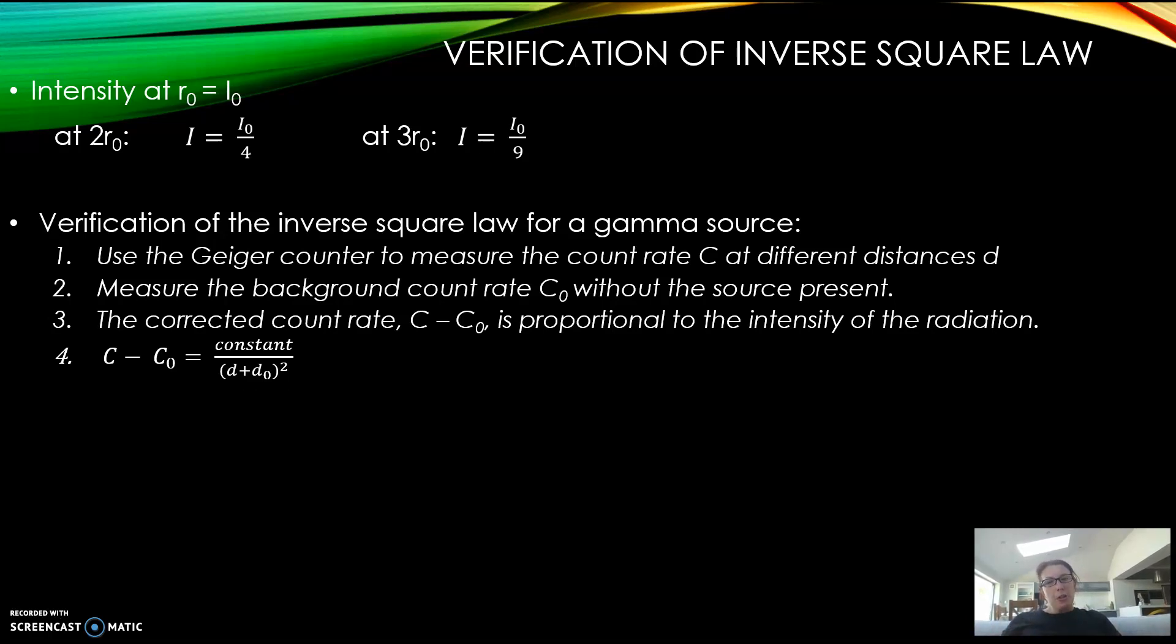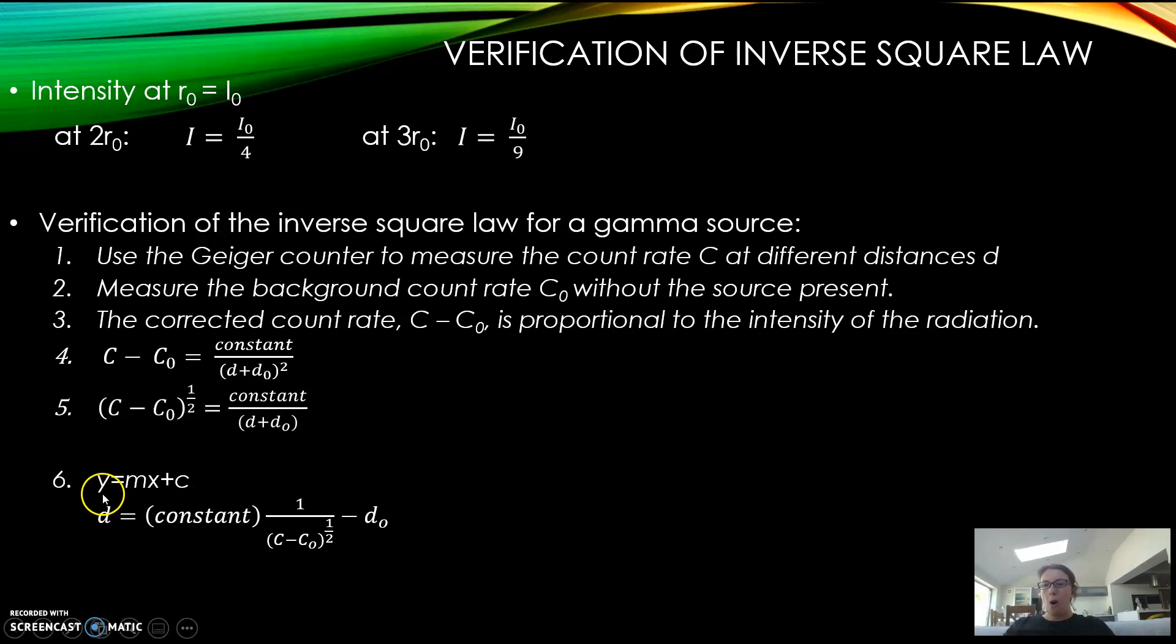If we want to verify it, we need to plot it on a graph. We want a straight line, and if we get a straight line then we're verifying that this is true. But it's got a squared term, so it wouldn't necessarily give us a straight line straight away, and the thing we're measuring is C minus C₀. So to get rid of the square, take the square root. You've got (C minus C₀) to the power half, which is the square root - that gets rid of the square. To plot a graph of y equals mx plus c, I'm going to make d the subject of y. When you rearrange it, you take the d over and divide by this, and the d₀ comes back to this side.